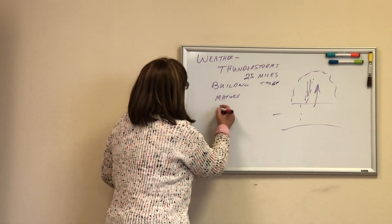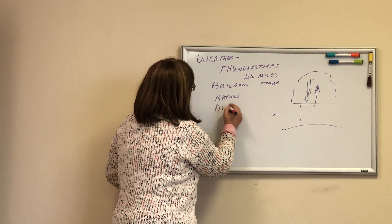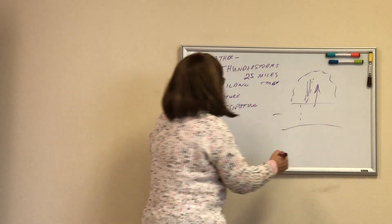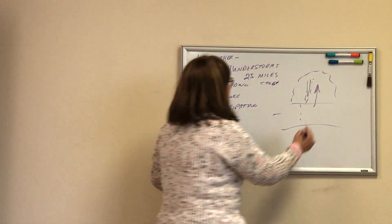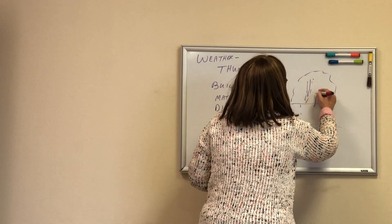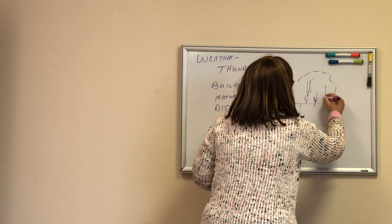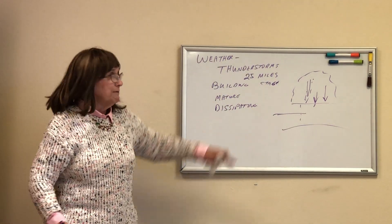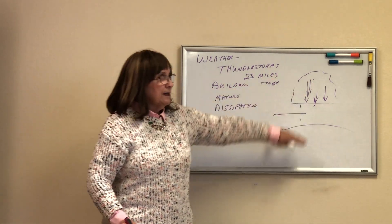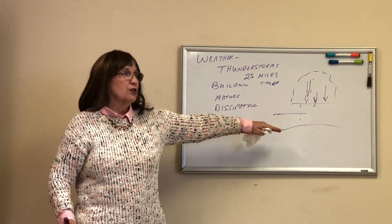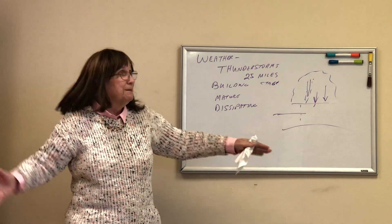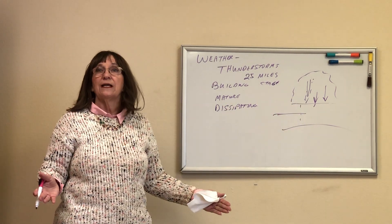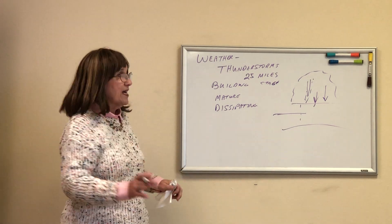Then we have the dissipating stage. This is when there are predominantly downdrafts — we don't have anything going up anymore, everything is going down. Will all these downdrafts take you to the ground? I don't want to find out. When is it safe to go through this thing? Never. Enough said.